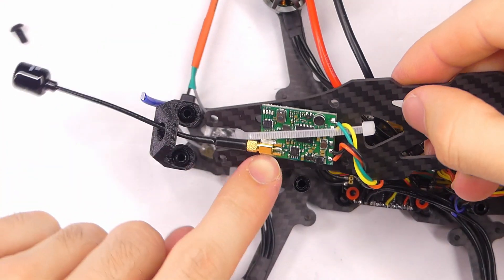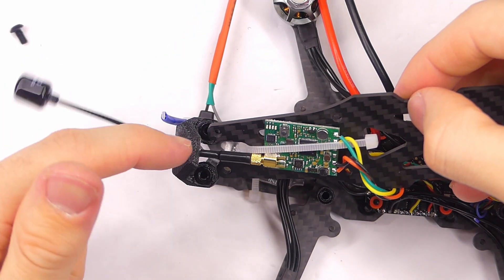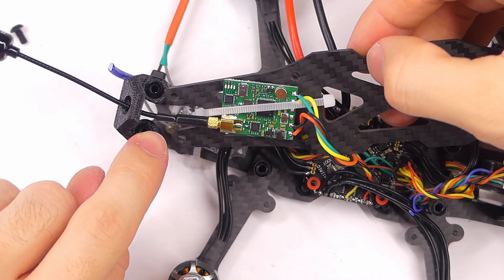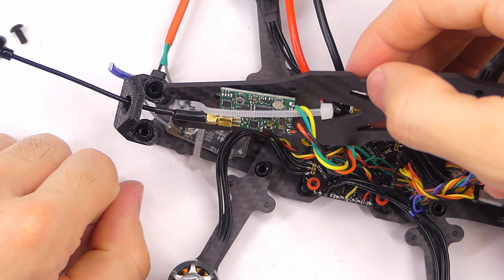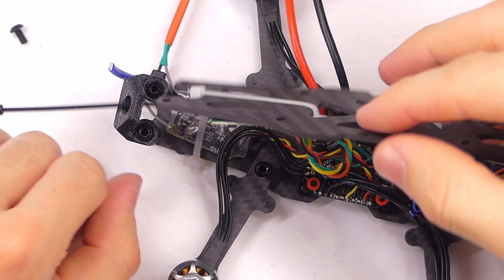So now what I have is I've disconnected my antenna, strung it through the TPU mount, and then reconnected it. So it's kind of like that. And it turns out there's not a super great way of attaching this video transmitter. So there's that.